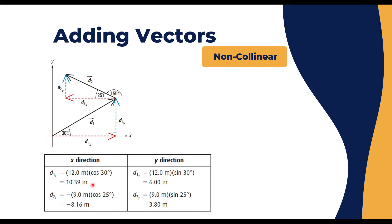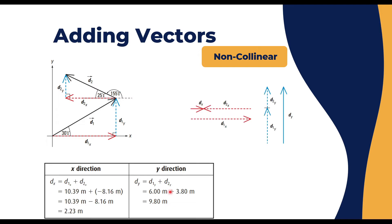Substituting the values: d1_x equals 10.39 meters (positive, pointing right), and d2_x equals minus 8.16 meters (pointing left). For the y-direction, d1_y equals 6 meters and d2_y equals 3.8 meters (both positive, pointing upward). Adding x-components: d_x equals d1_x plus d2_x equals 2.23 meters. Adding y-components: d_y equals d1_y plus d2_y equals 9.8 meters.